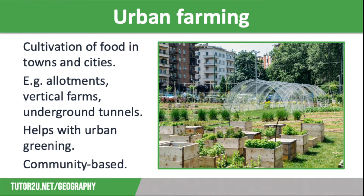Our third example of sustainable food production is urban farming. Urban farming is the cultivation, processing, and distribution of food in and around settlements, sometimes using allotments, but also using some more interesting ideas such as vertical farming in old office spaces, or even making use of old underground tunnels. These farms help with urban greening by increasing the green space in towns and cities, absorbing pollutants to improve air quality, increasing infiltration to reduce the risk of flooding, and increasing urban wildlife habitats by attracting wildlife such as birds and butterflies.